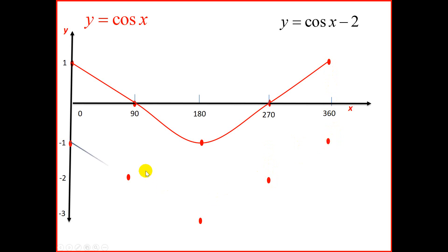And if we join these dots, we should get the graph of y equals cos x minus 2. So you see that the graph has shifted 2 units down. And that is what the negative 2 indicates.